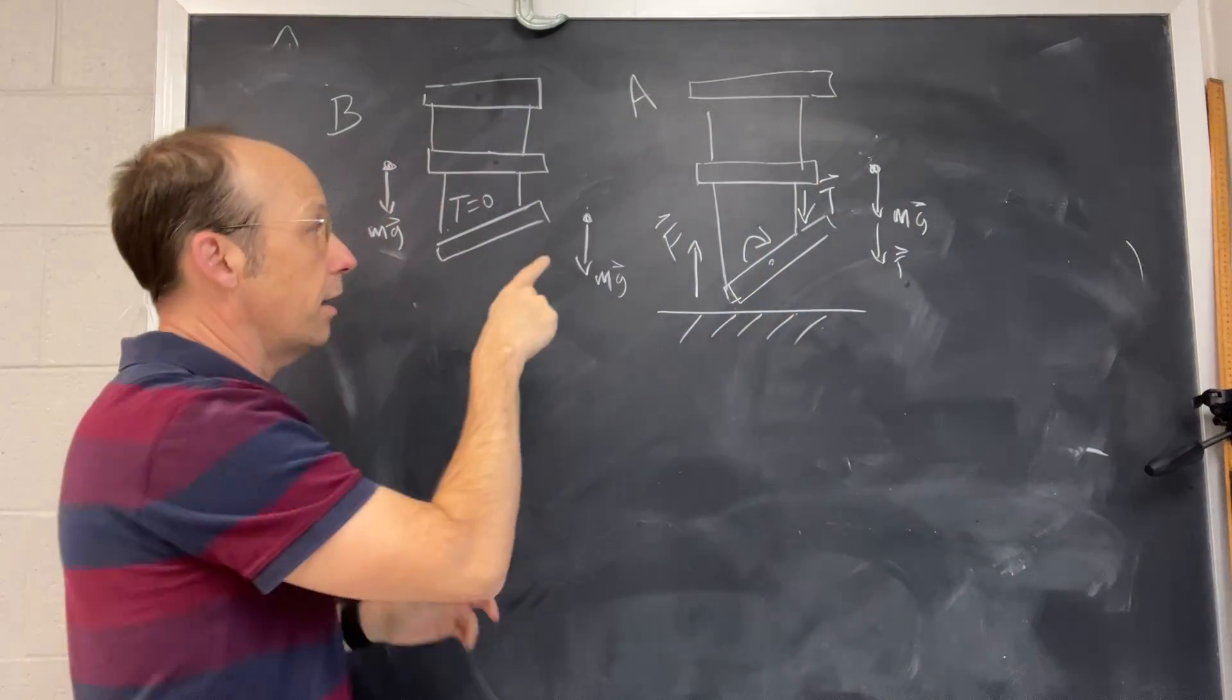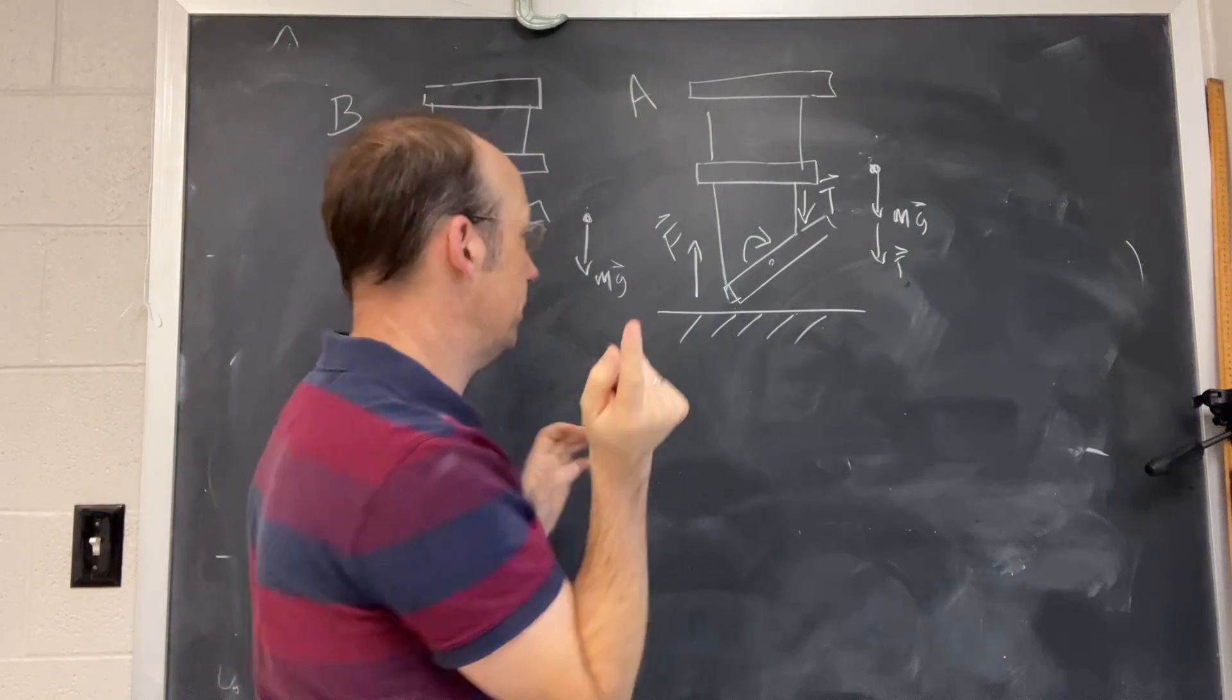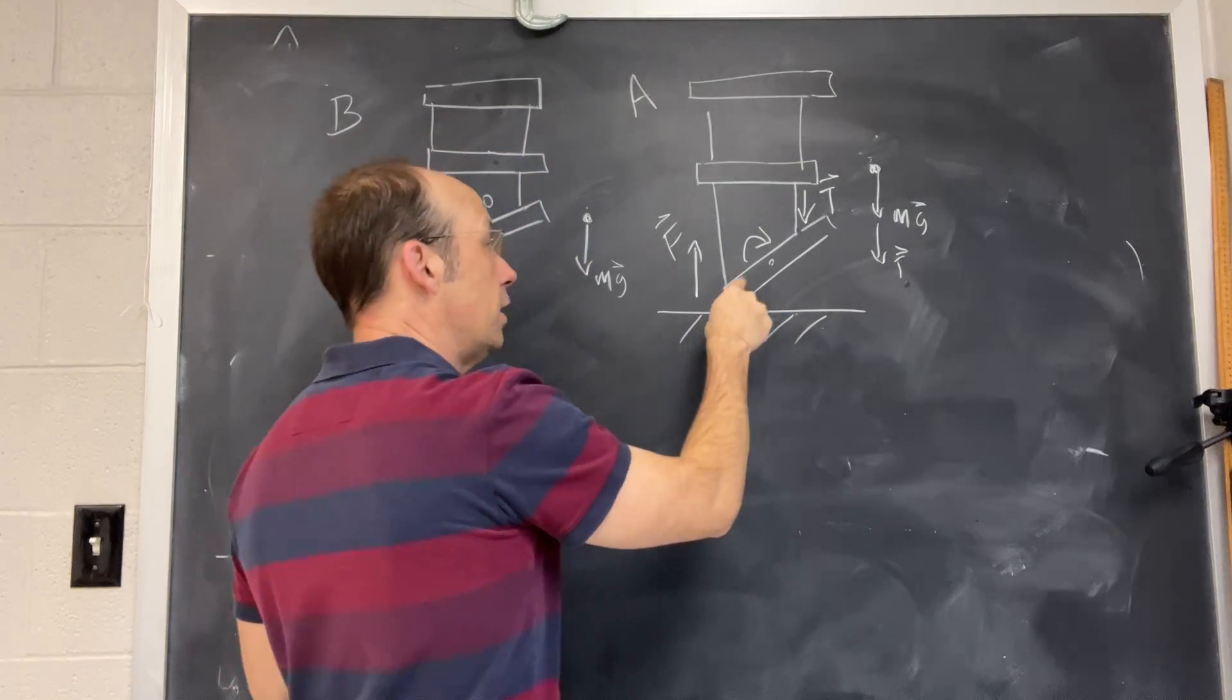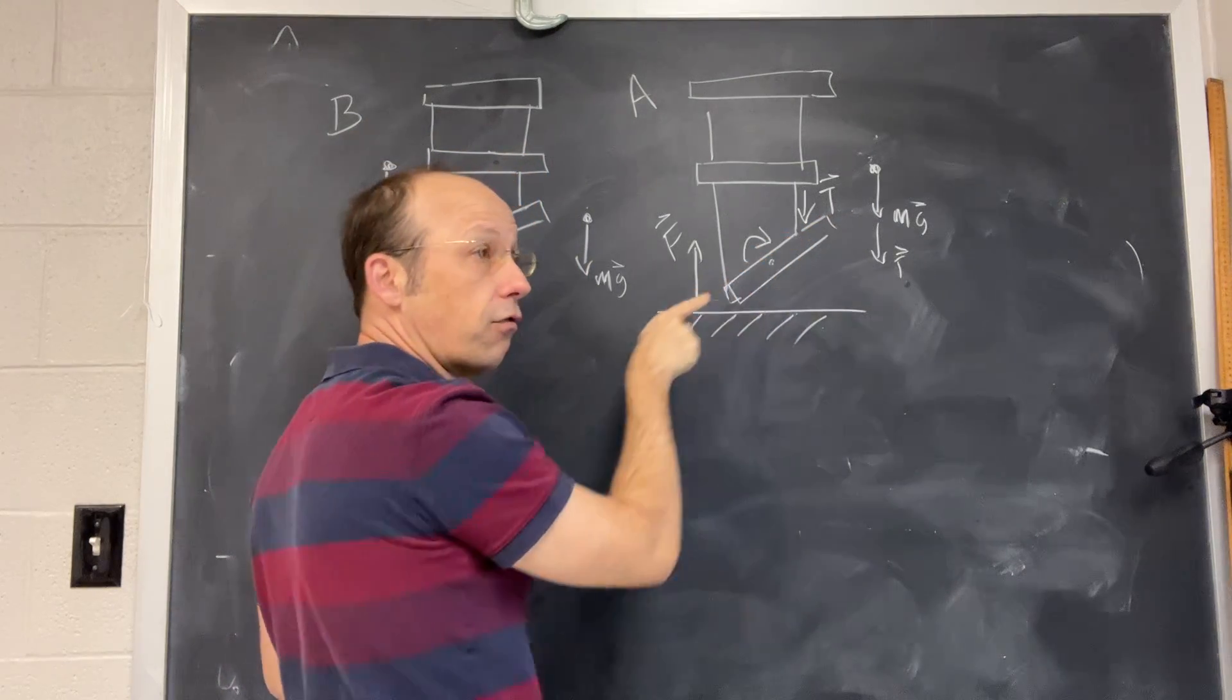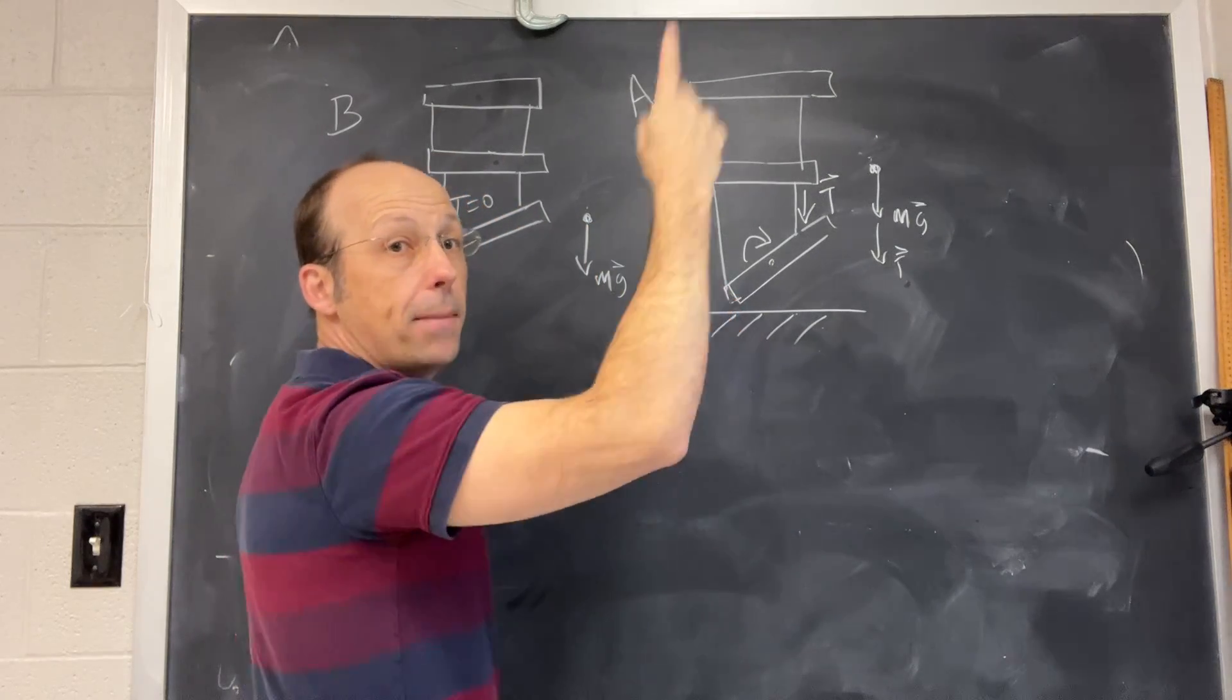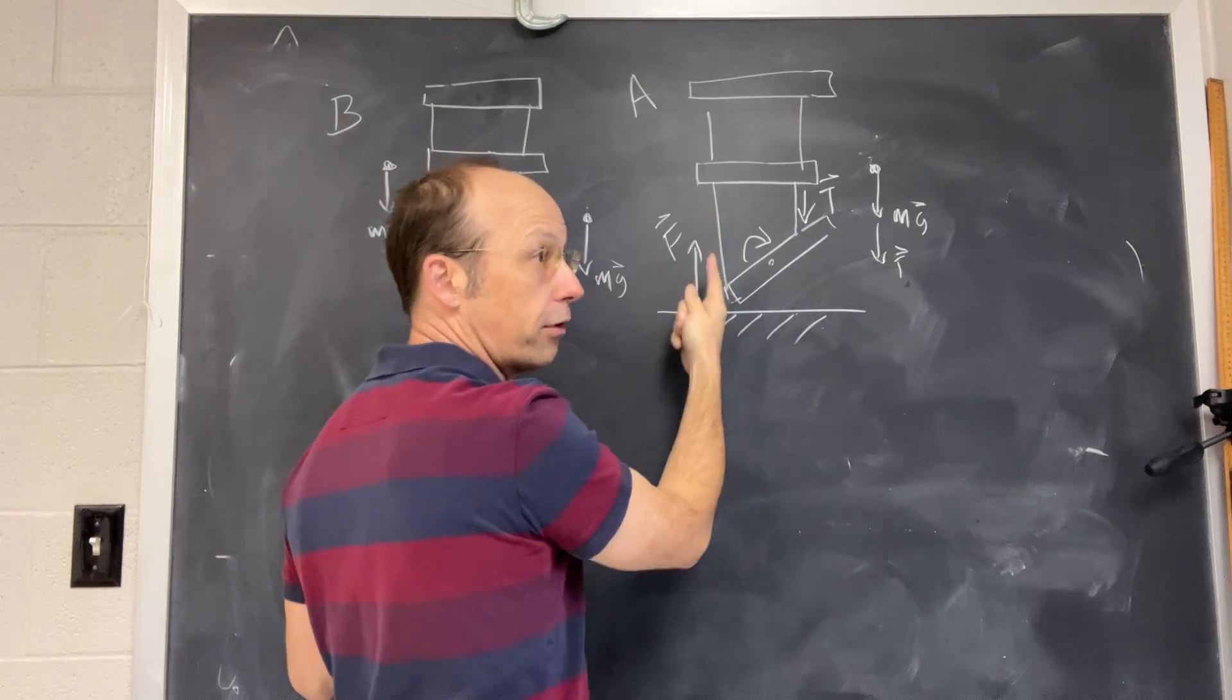Now what about the case where it hits the table? Something amazing happens - well, I mean, it's not amazing, it's kind of surprising. So because the rung is tilted, one side of the rung hits the table before the other side. So that's going to exert an upwards force.